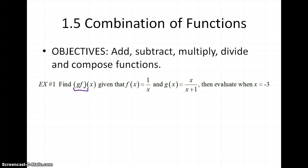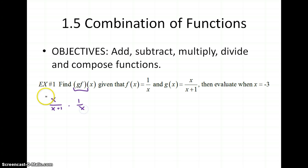Here we want to multiply the functions g times f of x, so we're going to multiply g of x times f of x. My g is x over x plus 1, and you multiply it by f of x, which is 1 over x. The x's cancel, so I'm left with 1 over x plus 1. That is g times f of x.